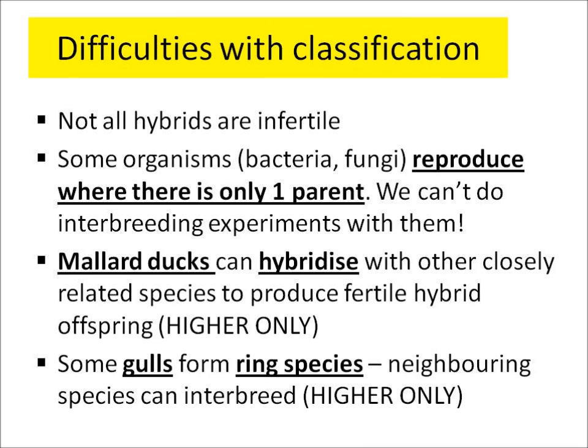We can have some difficulties with classification. Not all hybrids are infertile — some hybrids are in fact fertile, which is confusing. Also, some organisms reproduce with only one parent, like bacteria, so we can't do interbreeding experiments with them. At higher tier, you need to know that mallard ducks can hybridise with other closely related species to produce fertile hybrid offspring, and some types of gull form ring species where neighbouring populations can interbreed.